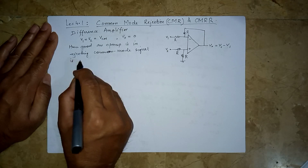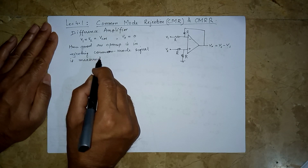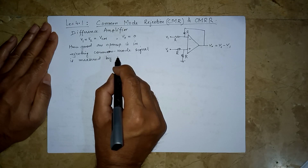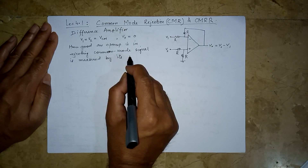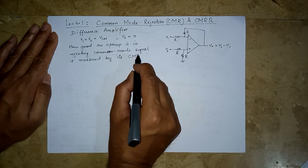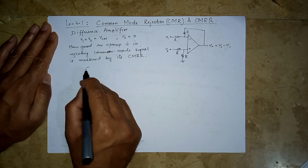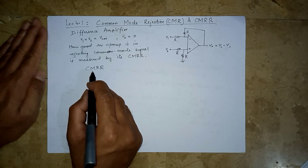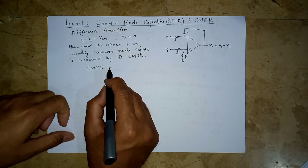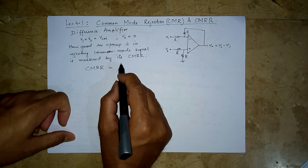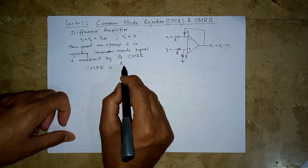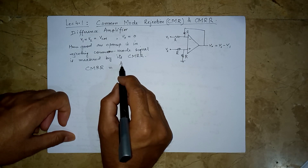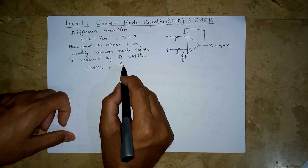This is measured by a quantity known as the common mode rejection ratio, CMRR. As the name implies, it is a ratio that represents how good an op-amp is when it amplifies a signal in the differential mode.